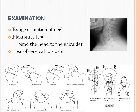On X-ray, cervical lordosis is also assessed. Cervical lordosis means the C-shape formed by the cervical bones. In cervical spondylosis, the cervical lordosis is lost, so the neck is in a straight position — that is called loss of cervical lordosis.